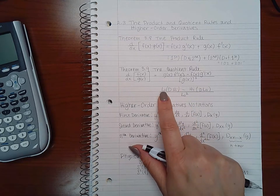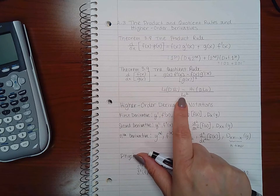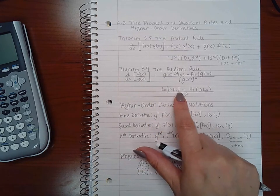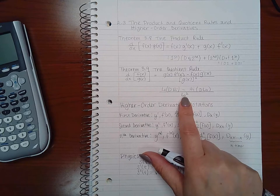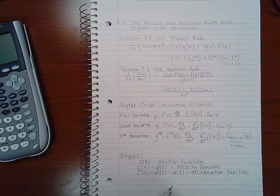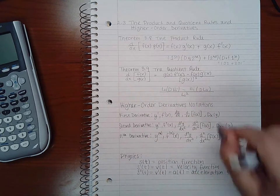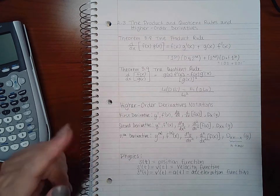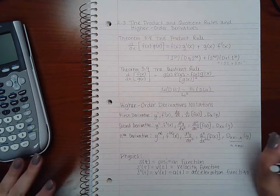So always remember that it starts off with low and low at the bottom. Low d high minus high d low over low squared. And you'll hear me saying that throughout every single problem just to help me remember which factor goes where.